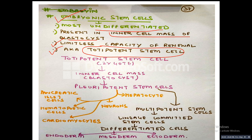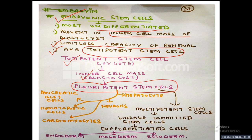Totipotent stem cells are present in the zygote. These give rise to the inner cell mass, which forms the blastocyst, and this inner cell mass gives rise to pluripotent stem cells. Pluripotent stem cells have two pathways: one pathway leads to multipotent stem cells, which are more lineage-committed and give rise to differentiated cells forming endoderm, mesoderm, and ectoderm.